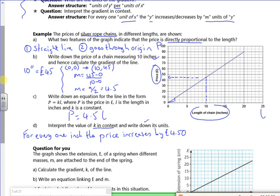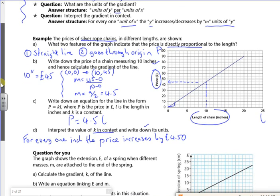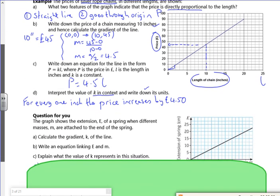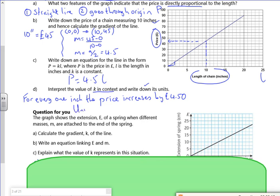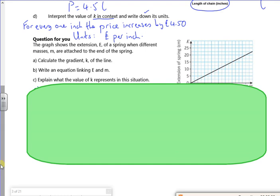Now it says write down the units. So if you remember the units are the units of y, which is pounds, per the units of x. So the units are pounds per inch. A question for you. Who doesn't love a question for you. Right, have a go at this one then.